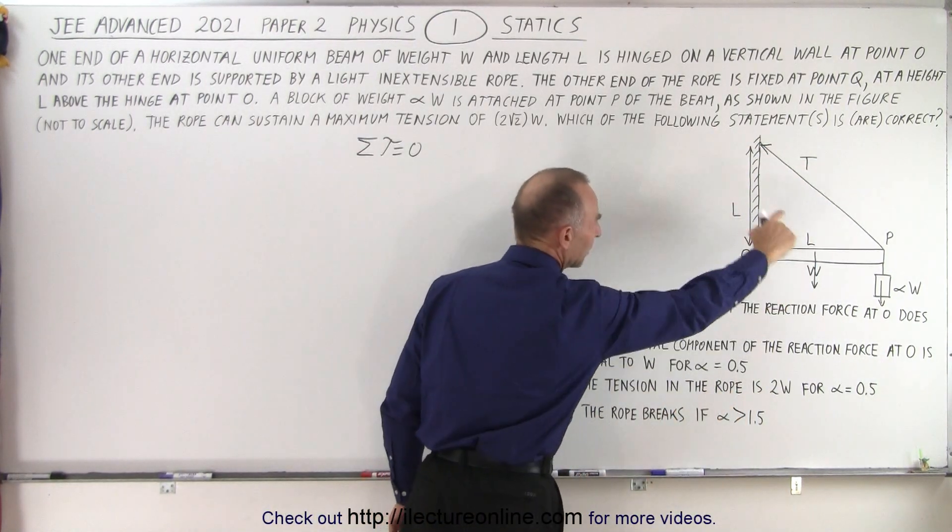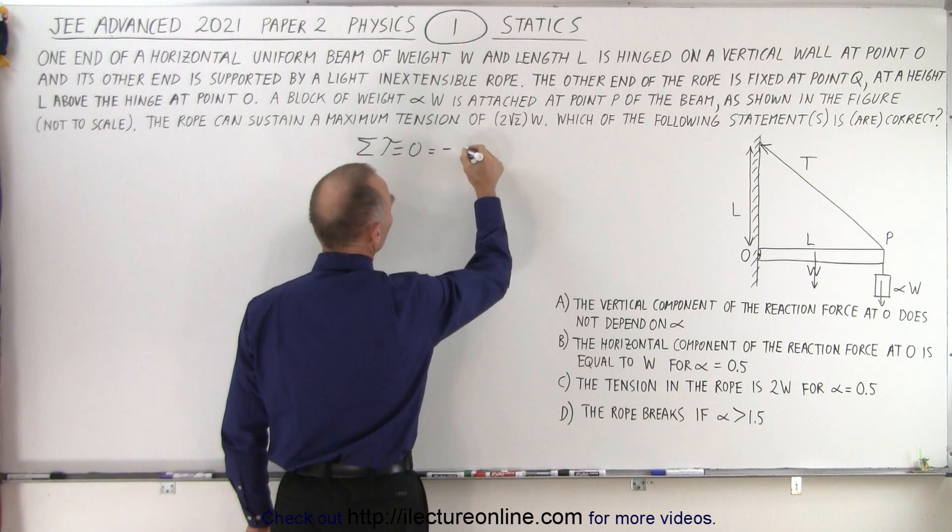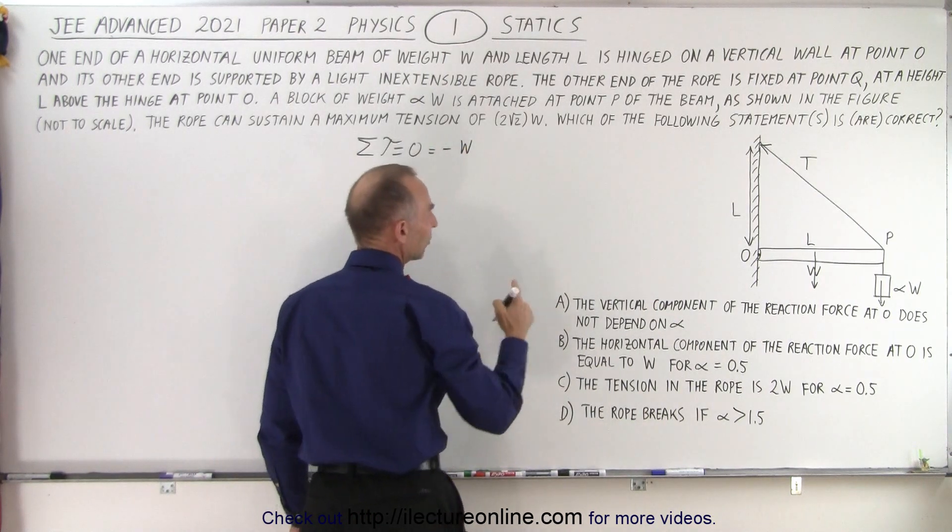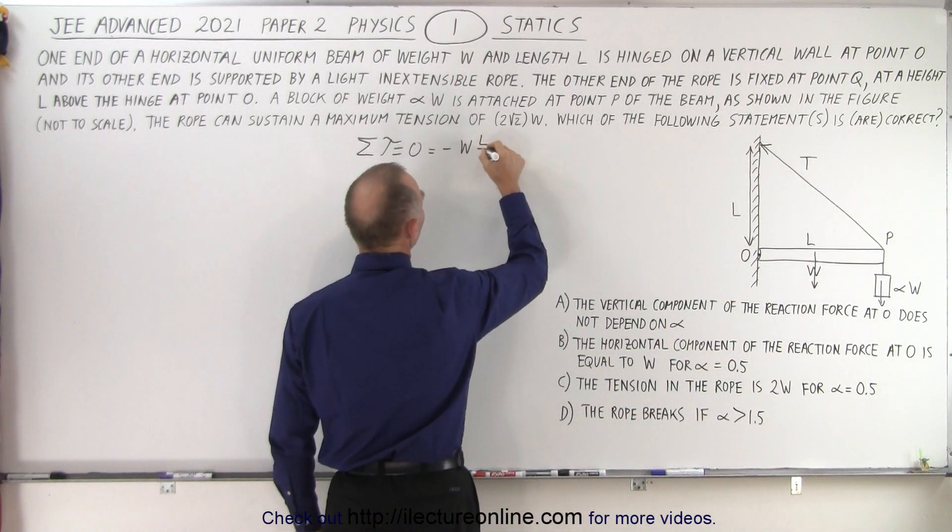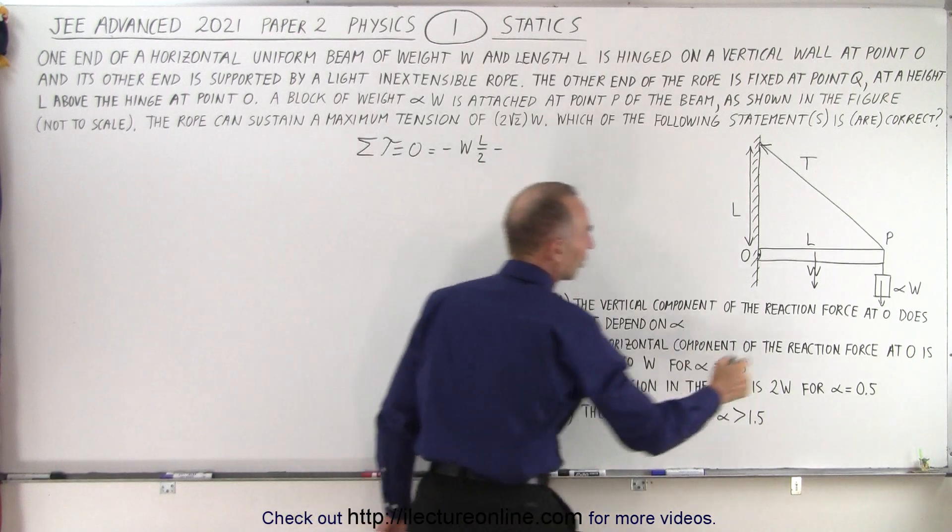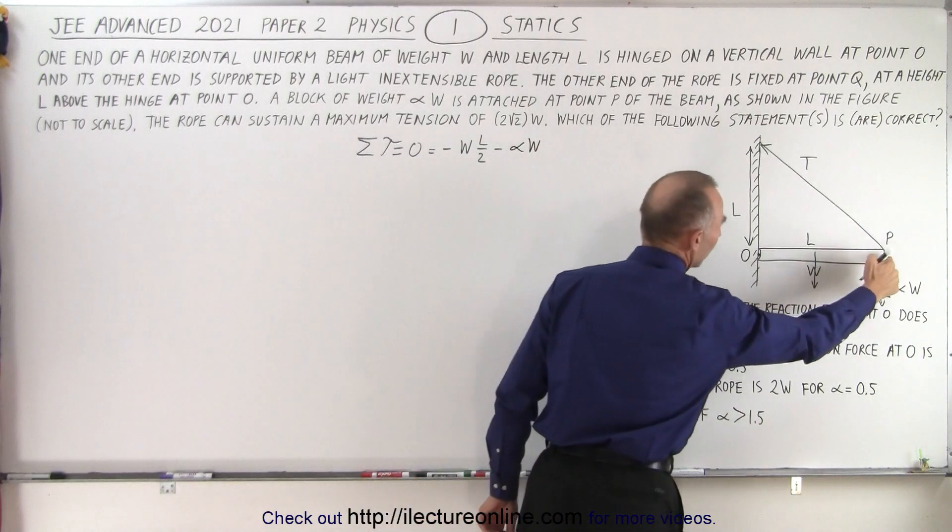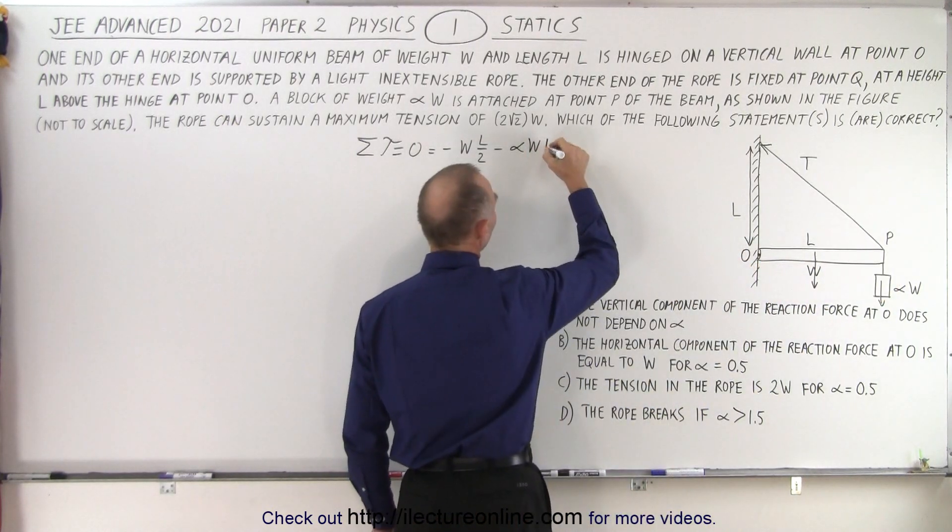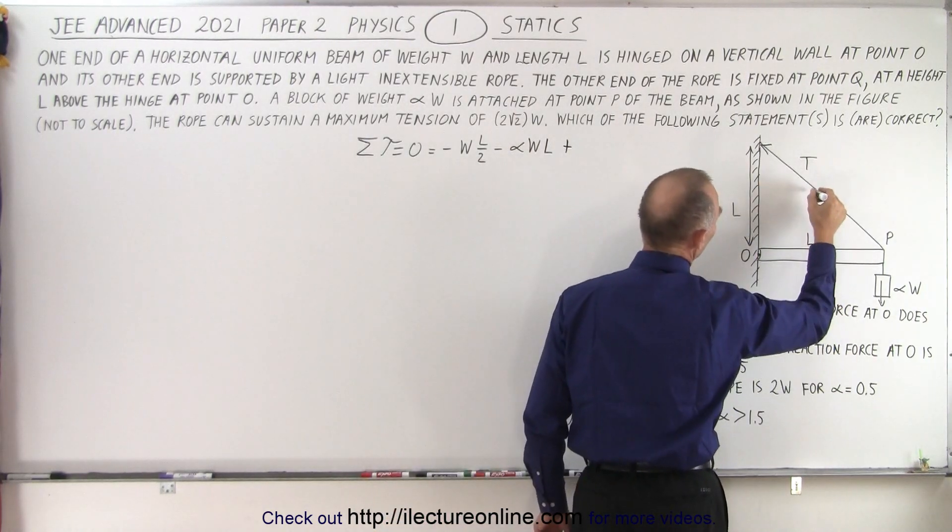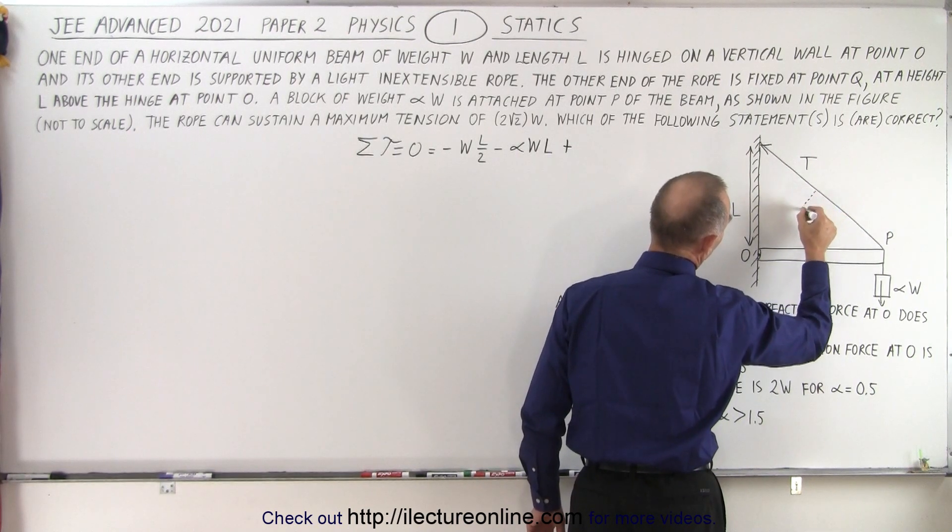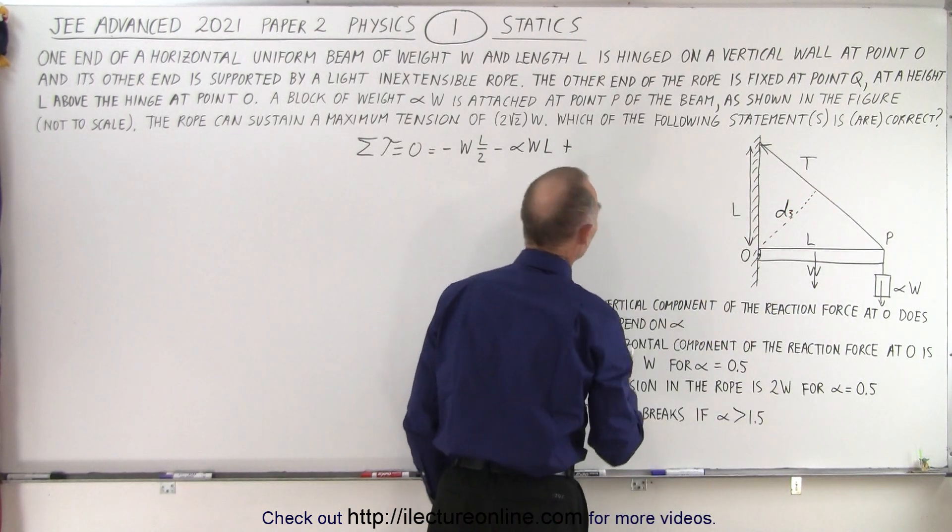The first one would be the weight of the beam. It's causing a clockwise rotation, which is a negative torque, so this is equal to negative the force, which is the weight of the beam, times the distance from the point of rotation to where the force is acting, which is L divided by 2, minus the weight of the object hanging from it, which is alpha W, times the distance from where it acts to the point of rotation, which is L, and then plus, because you can see that the tension will pull in the other direction.